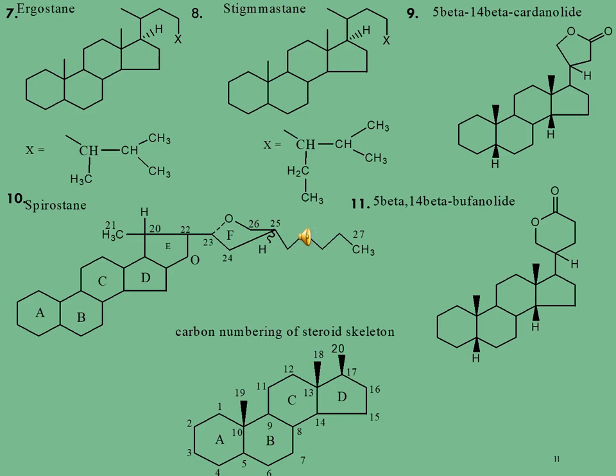The next molecule is spirostane, which consists of a total of 30 carbon atoms. This molecule is isolated from white onion and red onion and is soluble in ethanol, trichloromethane, and chloroform. Spirostane is used as an antifungal agent against pathogens like Penicillium italicum and Aspergillus niger.